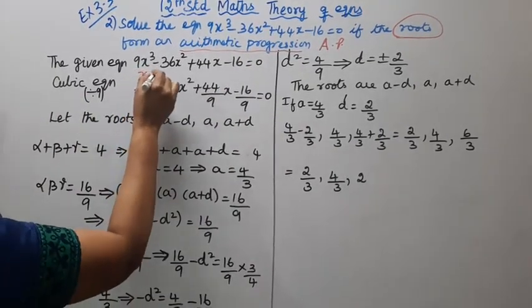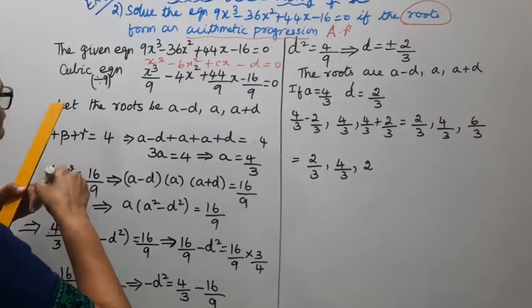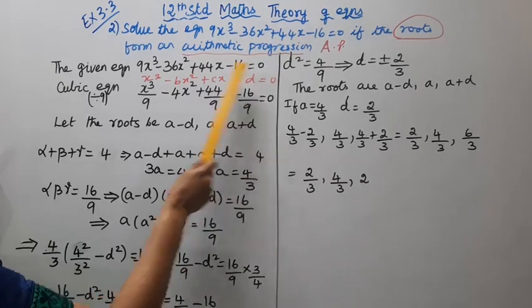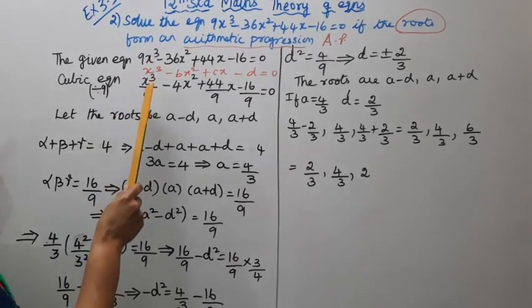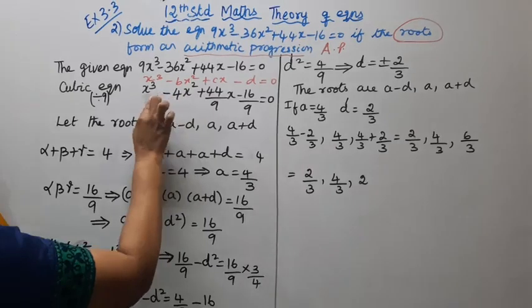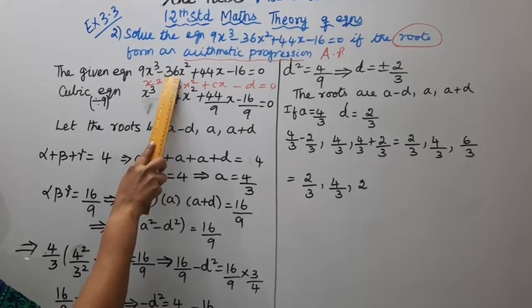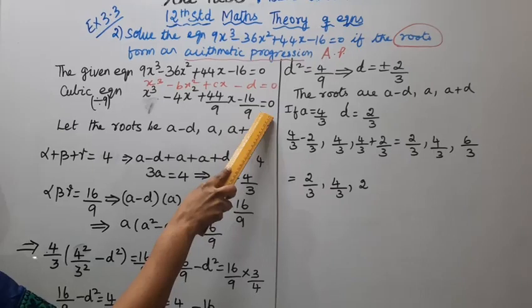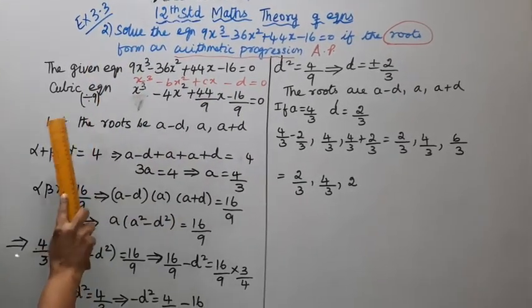The standard form is x³ minus bx² plus cx minus d equal to 0. Dividing the equation by 9: 9x³ divided by 9 gives x³, 36 divided by 9 gives minus 4x², plus 44 by 9 times x, minus 16 by 9 equal to 0.